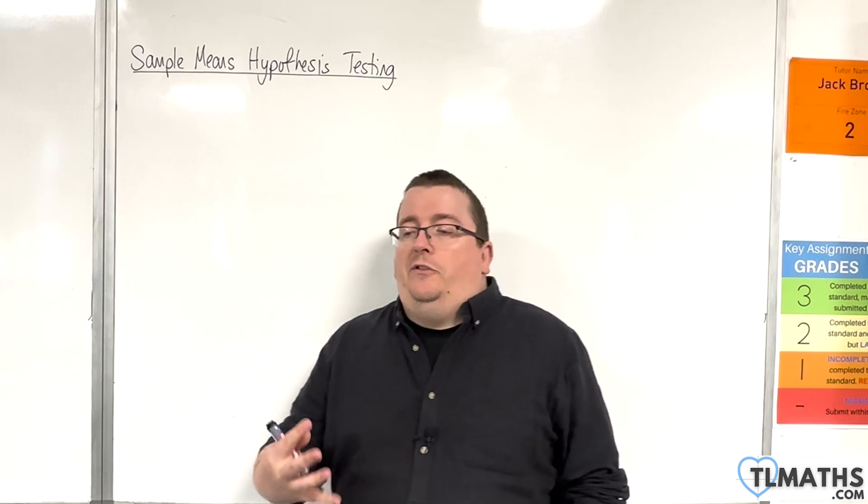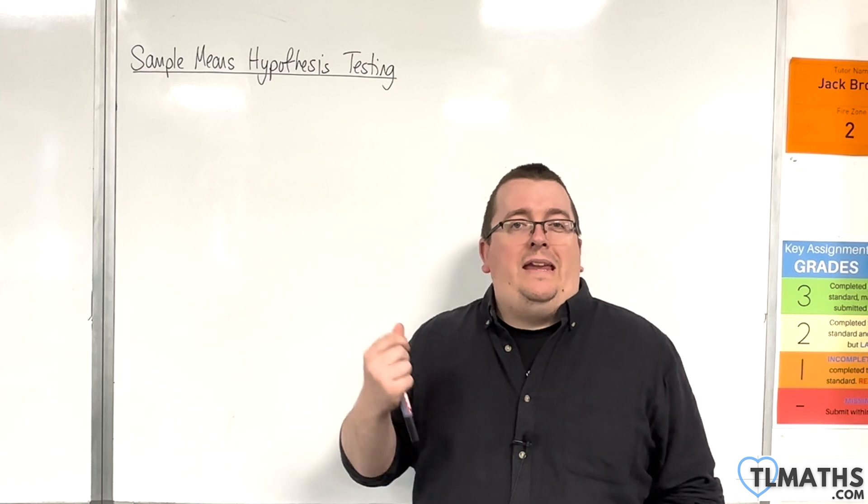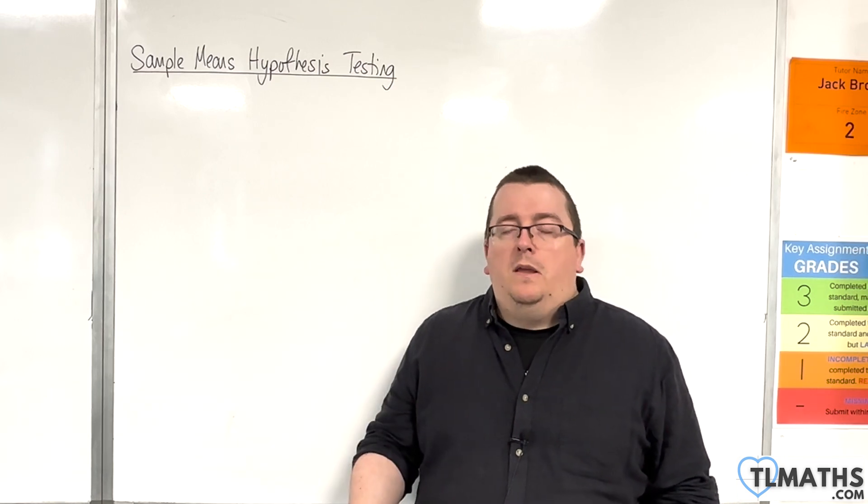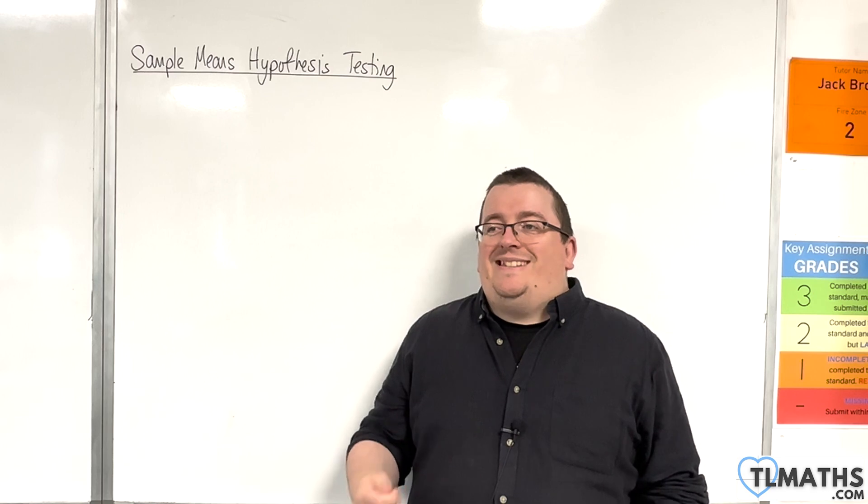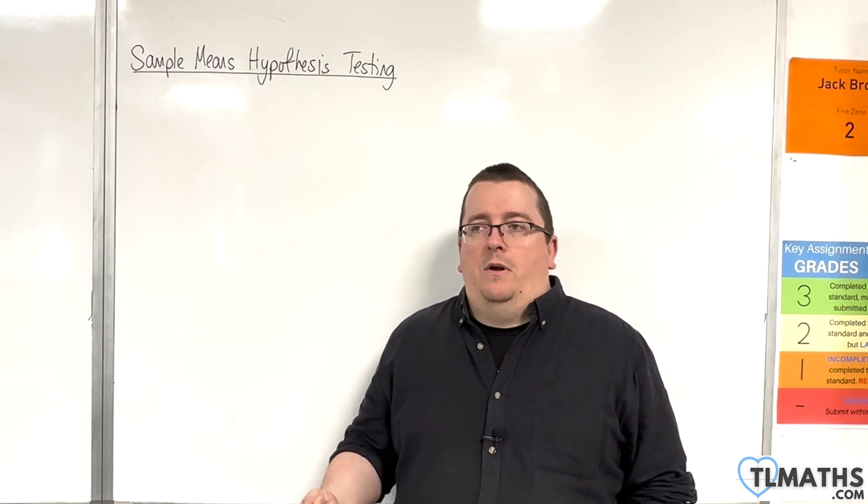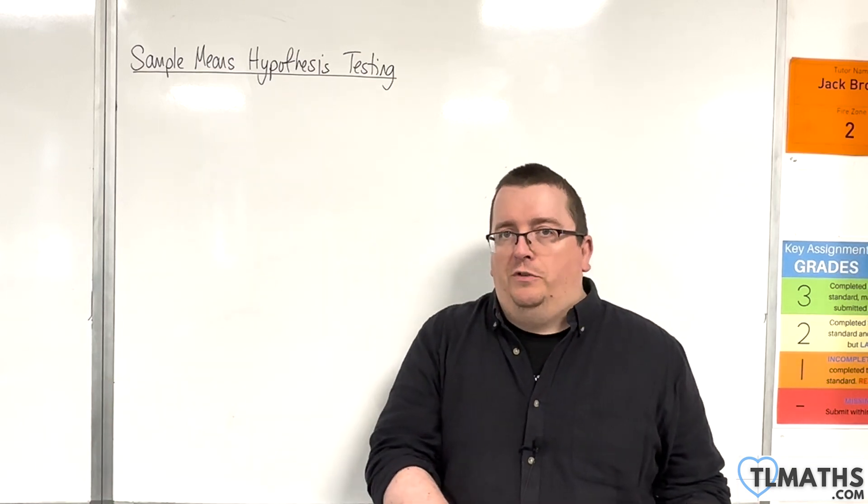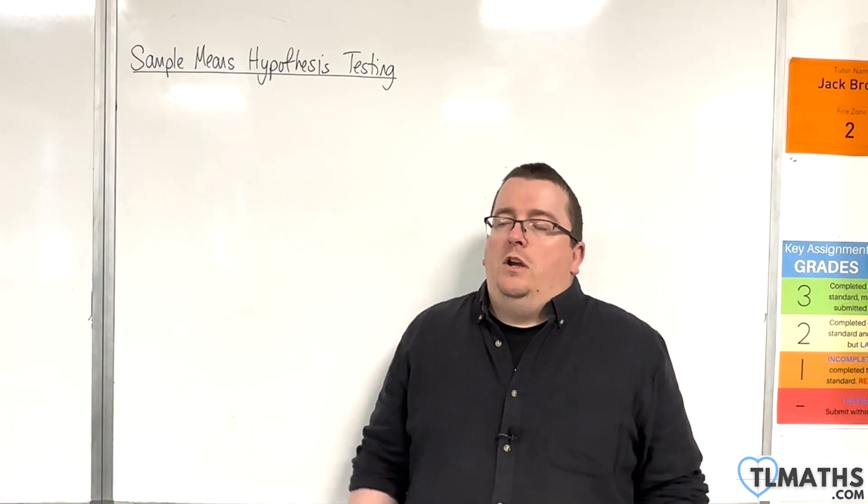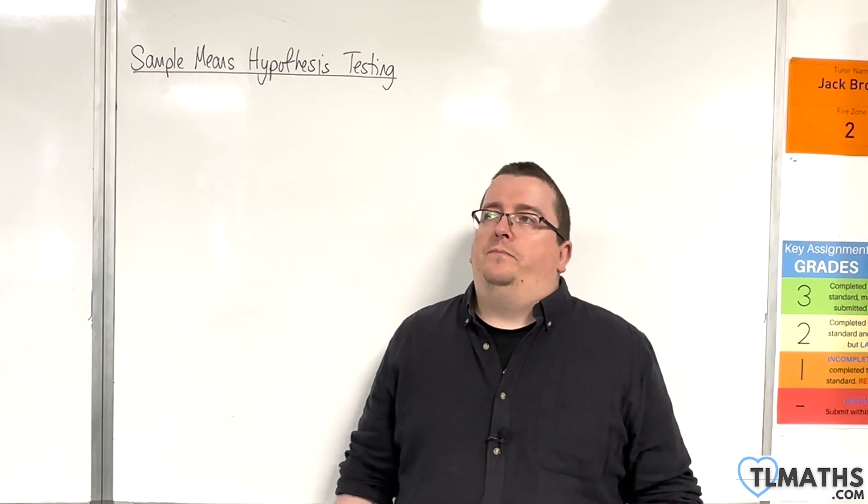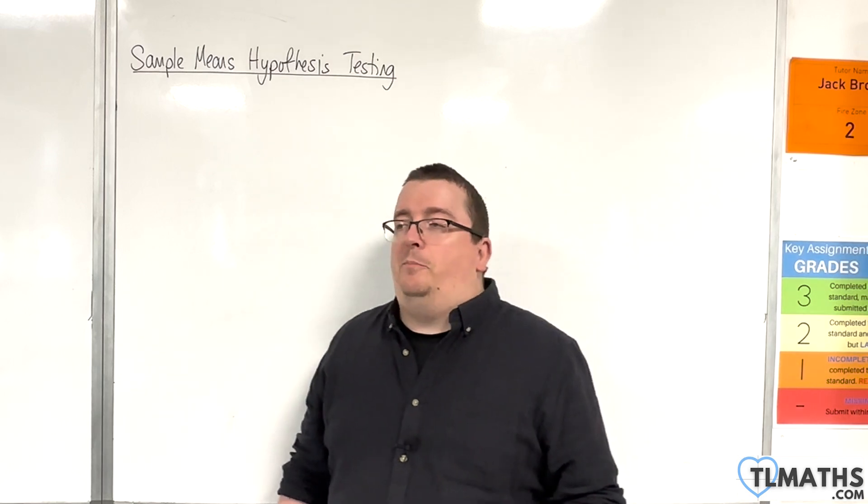So sample means hypothesis testing has those two methods as well, but it also has a third, which is using a test statistic, which is essentially a critical region method that just brings it back to using the standard normal distribution, which you may well see in mark schemes, in exam paper mark schemes.